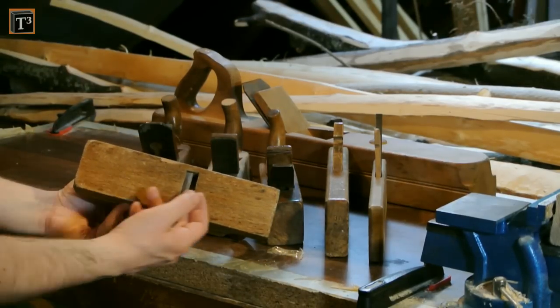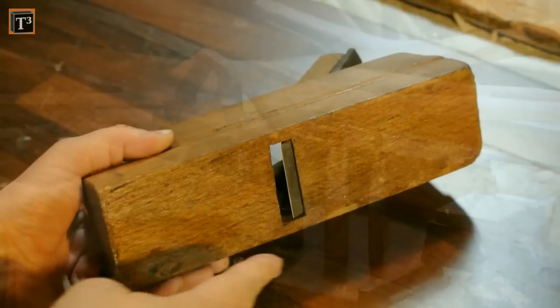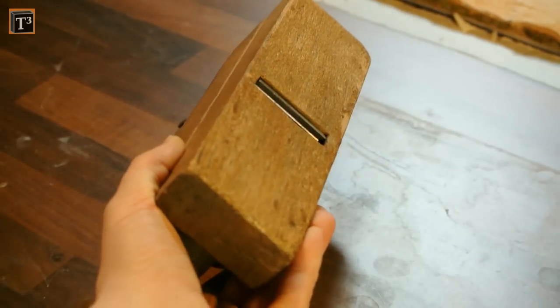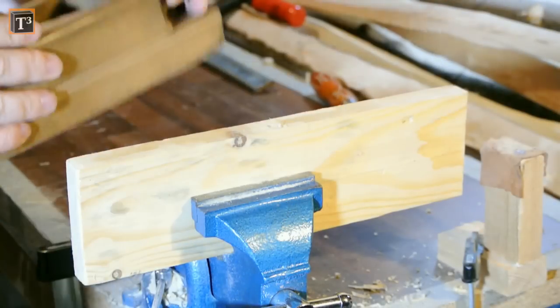If you have a look at this one you can guess from the scratches on its sole how regularly it has been used. The body is made from beech wood and a good 60 years old. Its iron may be even older.